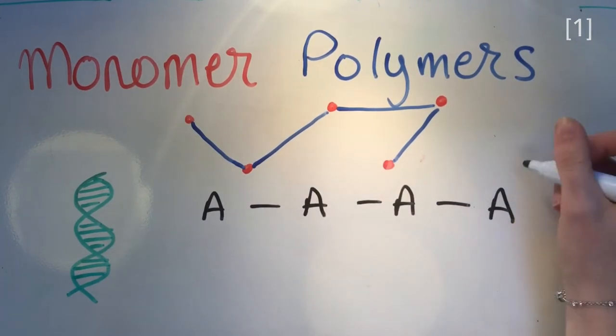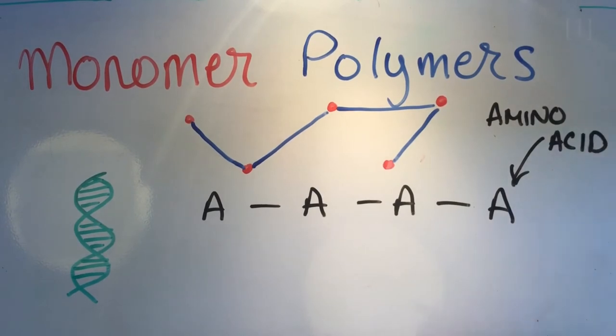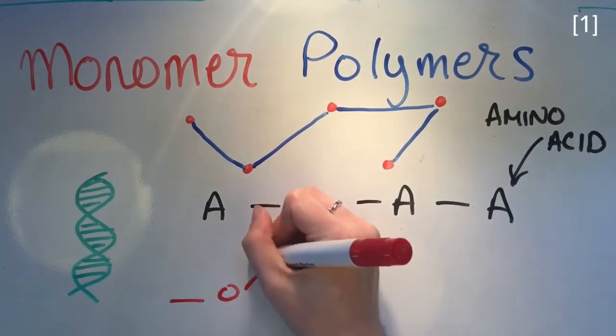The other is synthetic polymers, which are derived from petroleum oil and are man-made. An example of a synthetic polymer is polyester.